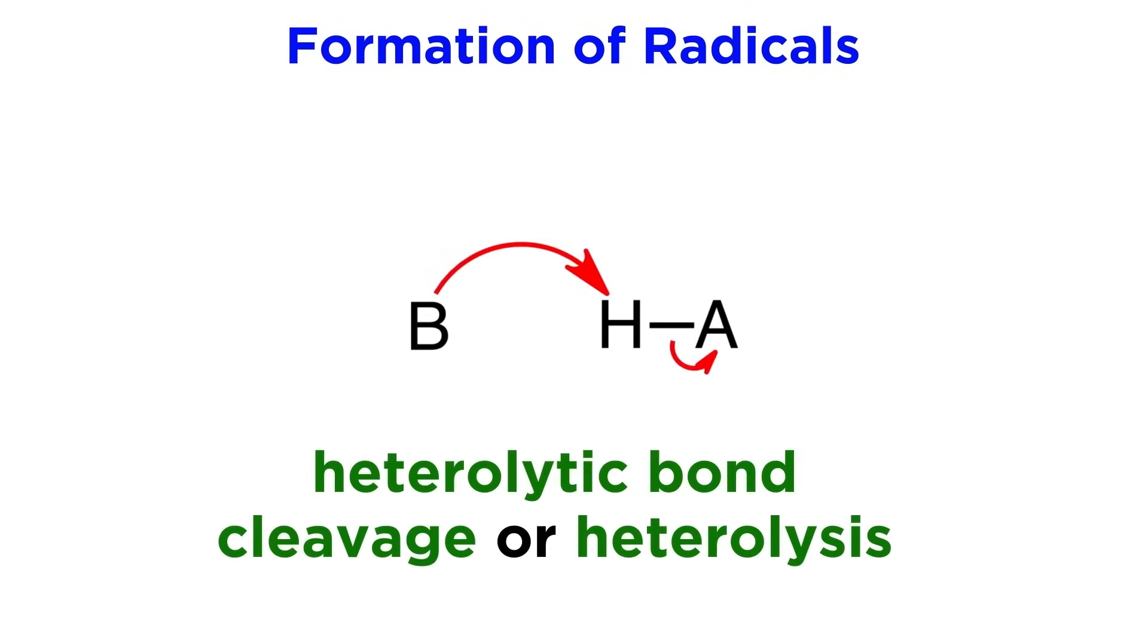The next thing we must address is how radicals form. In most organic reactions, every step involves heterolytic bond cleavage, or heterolysis. This is where both of the electrons in a covalent bond stay together, like when a lone pair on a base gets a proton, and the electrons in this bond go to form some other bond, and so forth.